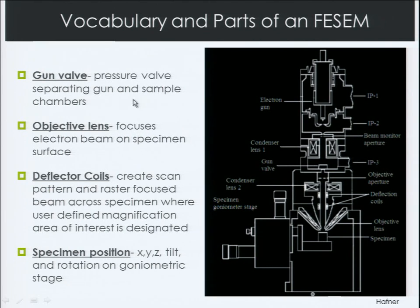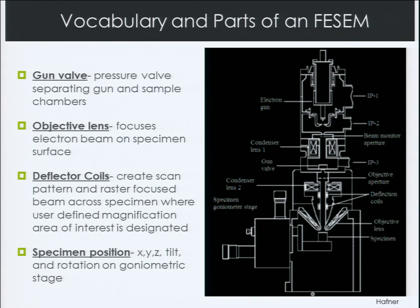Other components worth mentioning include the gun valve, located in the middle of the tool — a pressure valve separating the gun and sample chambers. If you want to load a sample, you must vent the chamber and return it to atmospheric pressure before opening the chamber door. The gun valve must be closed to prevent a rush of air into the high vacuum part of the instrument. The objective lens is the final lens for fine-tune focusing onto the specimen. There are deflector coils for rastering the beam across the sample, and a stage that holds the specimen and can move in X, Y, and Z directions as well as tilt and rotation.